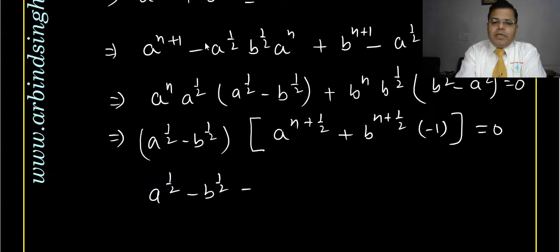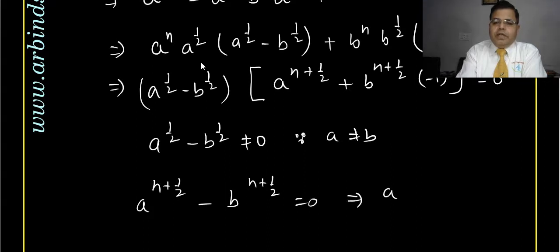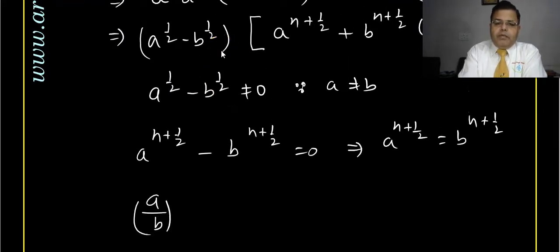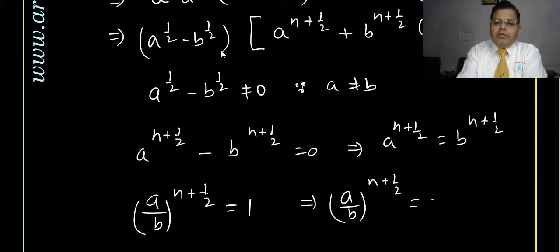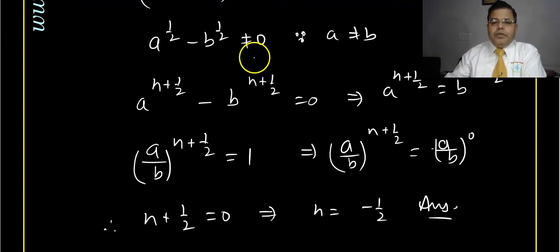Since a ≠ b, the factor (a^(1/2) − b^(1/2)) ≠ 0, so we must have a^(n + 1/2) − b^(n + 1/2) = 0, which means a^(n + 1/2) = b^(n + 1/2). This gives (a/b)^(n + 1/2) = 1 = (a/b)^0, so n + 1/2 = 0, and therefore n = −1/2. Hopefully you got it!